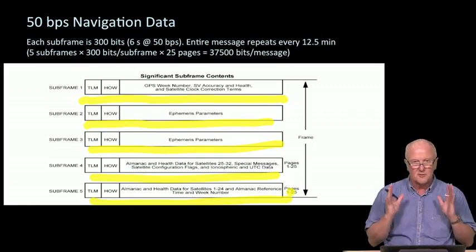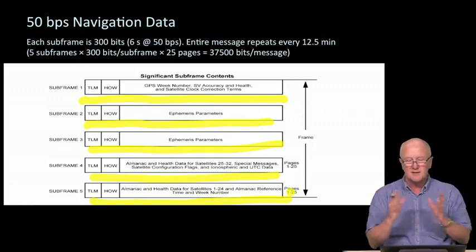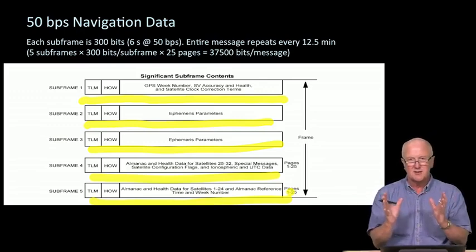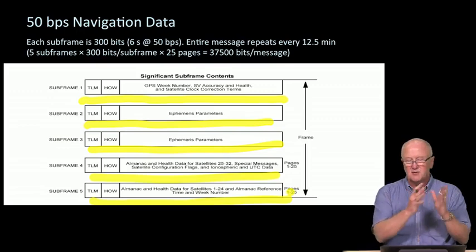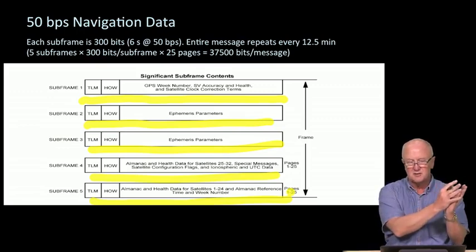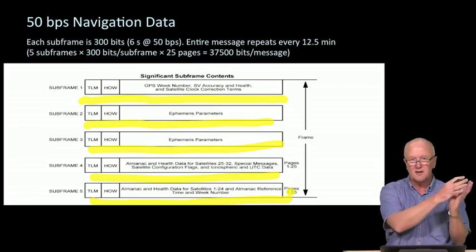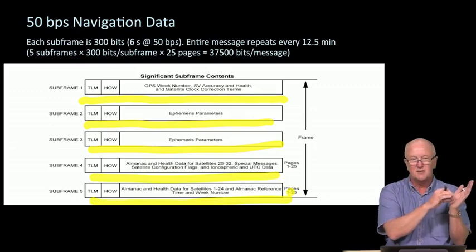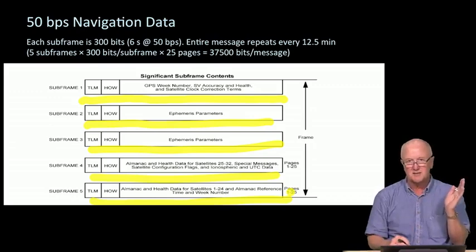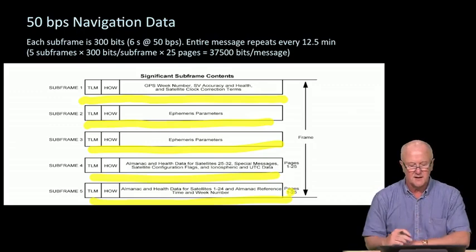That information is handy for the receiver because very often when it's trying to get synchronized and trying to do a first position fix based on GPS, it will capture the strongest signal. The benefit of the almanac is once you've captured the strongest signal, you can look into the nav message for that strongest satellite and figure out where to look for the other satellites.